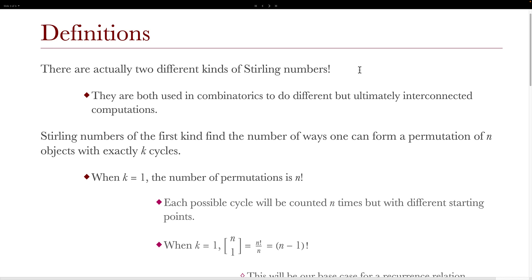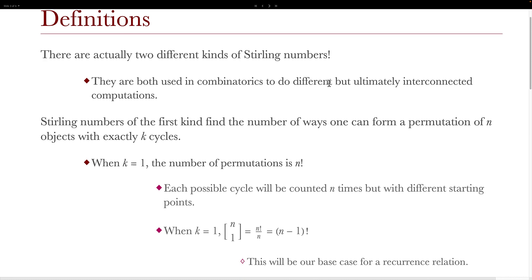There are actually two different kinds of Stirling numbers, and they're both used in combinatorics to do different but ultimately interconnected computations. The Stirling numbers of the first kind find the number of ways that one can form a permutation of n objects with exactly k cycles. To give us a better picture of this, we'll build up our own recurrence relation. When k equals 1, the number of permutations will be n factorial. However, keep in mind that each possible cycle will be counted n different times with different starting points. So we adjust and say when k equals 1, [n cycle 1] will equal n factorial over n, which equals (n−1) factorial.